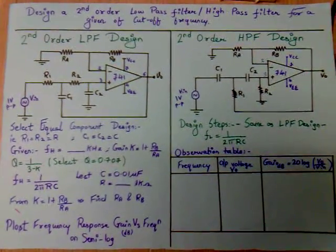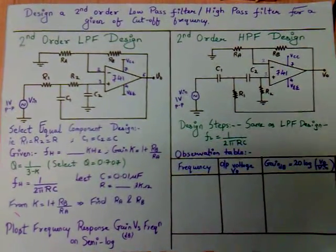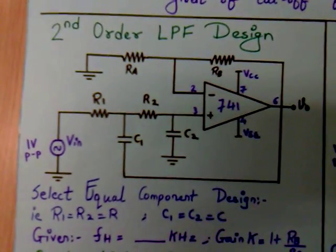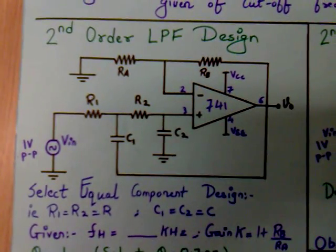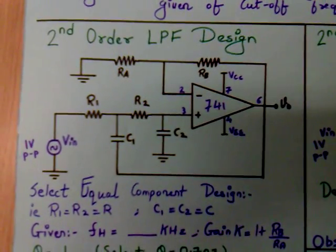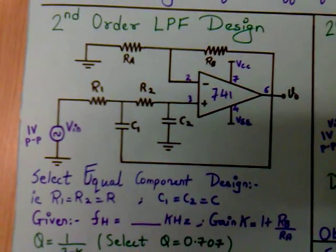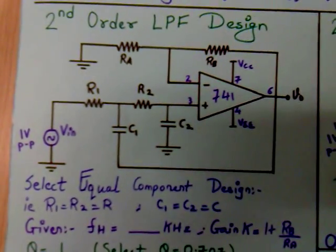Design of a second order low pass filter or high pass filter for a given cutoff frequency. In second order low pass filter design, two RC networks are connected to the positive terminals as shown in the diagram.